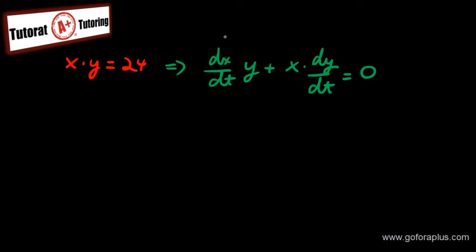Now do I have dx over dt? Yes, I have 1.6. Do I have y? I don't. Do I have x? Yes, I do. I can figure out. This is basically my question, dy over dt. But what is x?